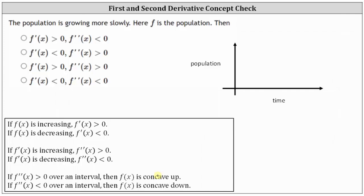Let's take a look at our first situation: the population is growing more slowly. Here, f is the population. Because the population is growing, the population is increasing, and therefore f prime of x is greater than zero, or positive.